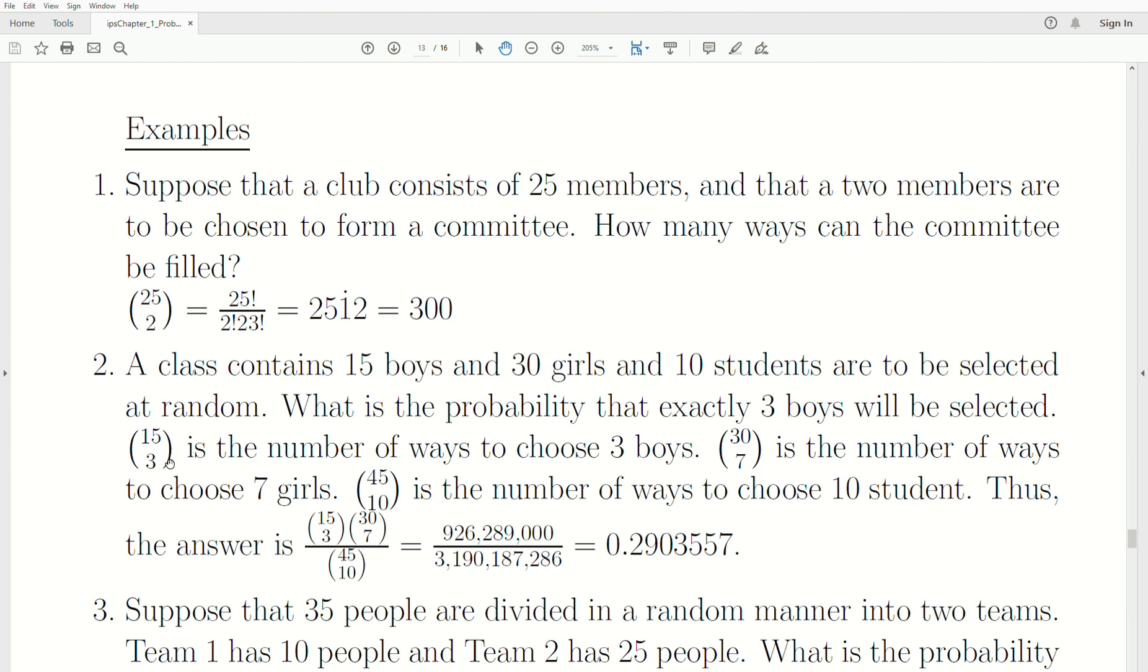And the three boys, it doesn't matter the order that we pick them, it's just three boys. And then we need to randomly pick seven girls. So it's 30 choose 7 is the number of ways to choose seven girls. Now the total number of ways to choose 10 students is 45 choose 10. And thus the answer is 15 choose 3 times 30 choose 7 divided by the total number of ways, which is 45 choose 10, which is a 29% chance that you'll have exactly three boys.